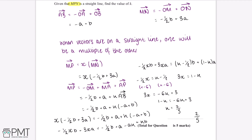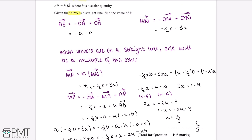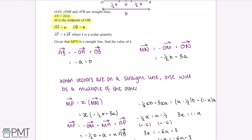This question is worth 5 marks. We get the first mark for finding AB, and the second mark for finding MN.